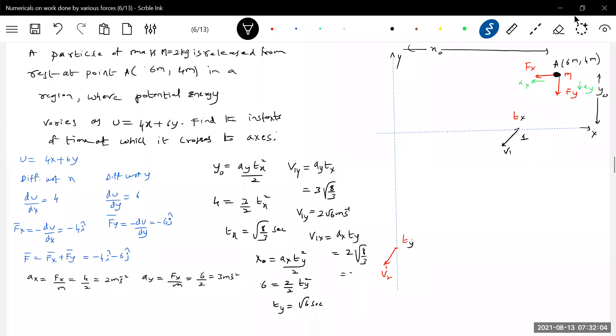v₁y = ay·tx. Now I just changed the symbol. Similarly, v₂y = ay·ty where ay = 3 and ty = √6. Then v₂x = ax·tx where ax = 2 and tx = √(8/3).